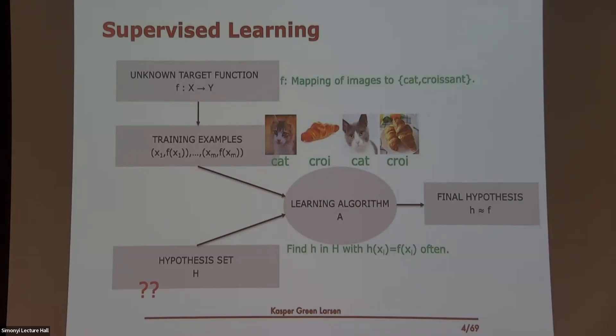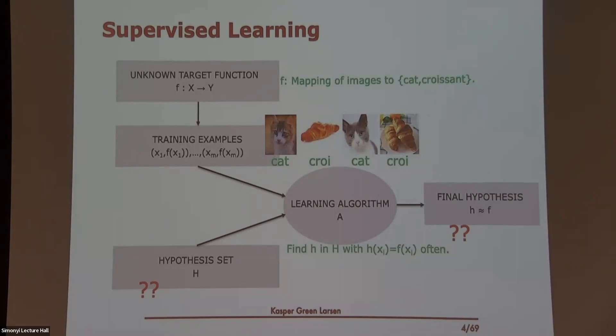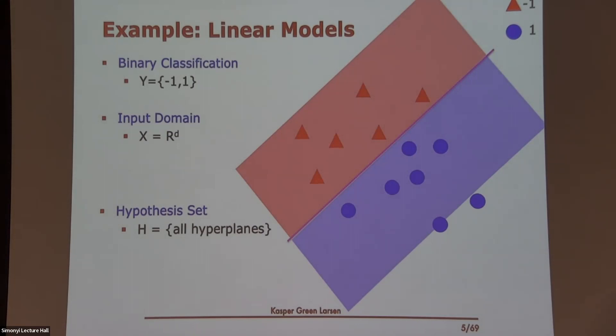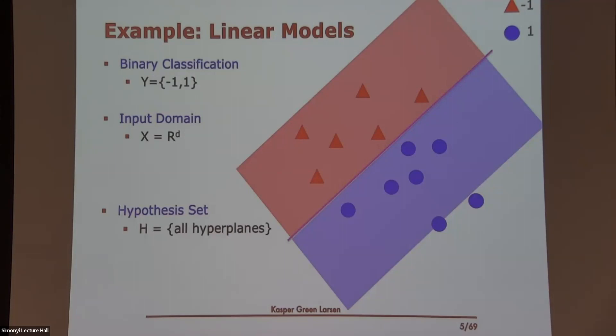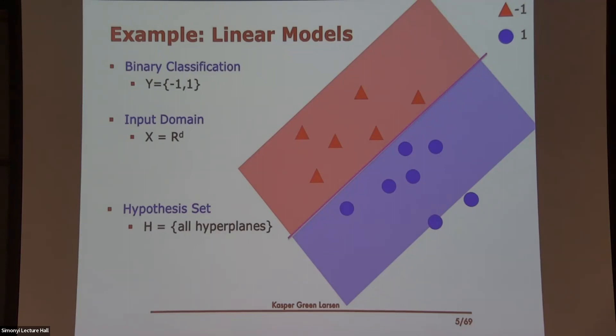The question is what the hypothesis set is, and what we mean by H being close to the unknown target function F. One example is linear models: for binary classification we could assume the input domain is d-dimensional vectors, and the hypothesis set could be all hyperplanes — everything on one side returns plus one, and everything on the other side returns minus one. Now we formalize what we mean by H being close to F, and we look at PAC learning, standing for probably approximately correct.